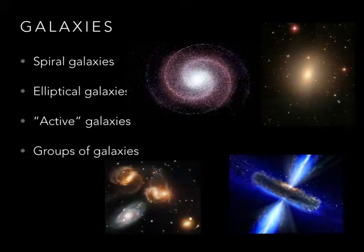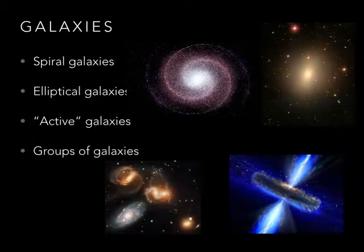They also study galaxies, and there's not just one type. There are spiral galaxies — that's what the Milky Way looks like, kind of like when you flush a toilet and the water swirls down in a spiral. There are also elliptical galaxies, which don't have spiral forms — they're just kind of lumps or smudges.